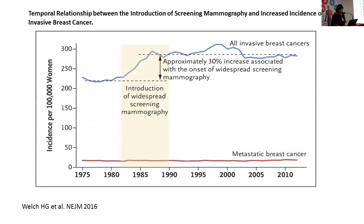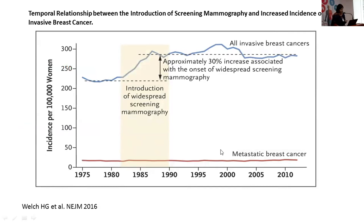A 2016 publication showed that from 1975 to 1990, before routine mammograms, there was a baseline incidence. Subsequently when routine mammograms were introduced there was an increase in the incidence of invasive breast cancer, yet the incidence of metastatic breast cancer actually remained the same.